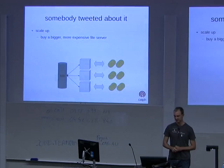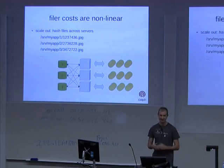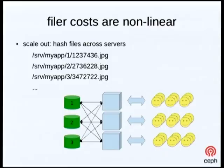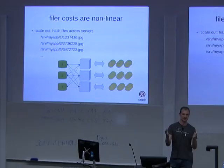That works for a while, but at some point you realize that the cost of these appliances tends to be non-linear relative to the amount of work you can actually get them to do. Eventually you realize that you need to scale out. The usual approach is to hash the name of the file content or the file name and use that to distribute across some number of servers — hash modulo the number of servers and mount a whole bunch behind things.